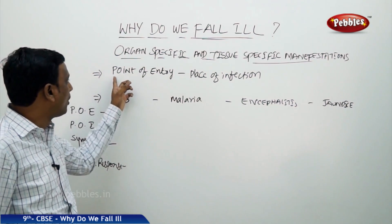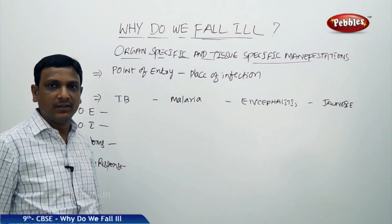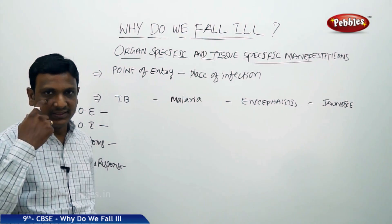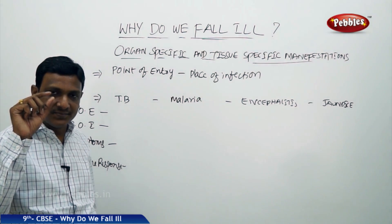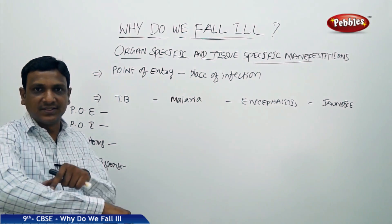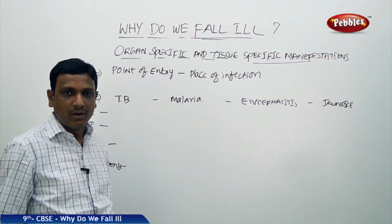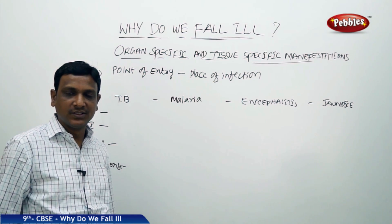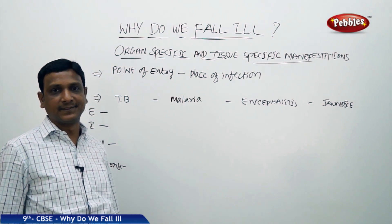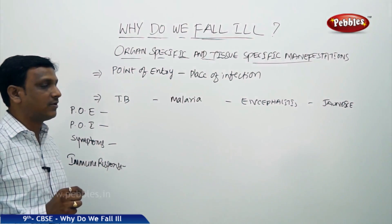In many diseases, the point of entry and place of infection are different. For example, a mosquito bites your hand, so the microorganisms causing malaria enter through your hand, but you don't get any infection on the surface of the hand or in the hand muscle. The malaria organisms infect your liver. So the point of entry and place of infection are different.